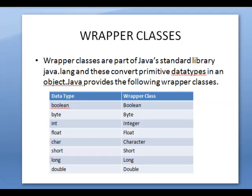Next one is wrapper classes. Wrapper classes are part of the Java standard library java.lang and they convert primitive data types into a Java object. Java provides the following wrapper classes corresponding to each primitive type. Note that in primitive data types the first letter is lowercase, but in wrapper classes all class names begin with a capital letter.